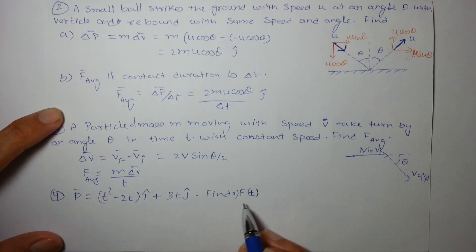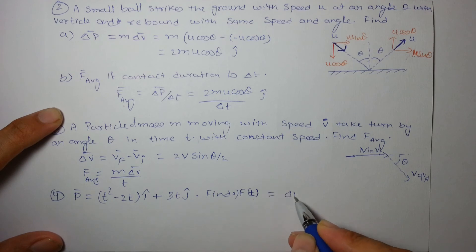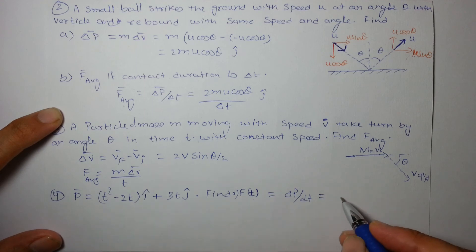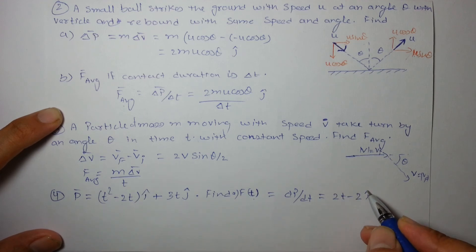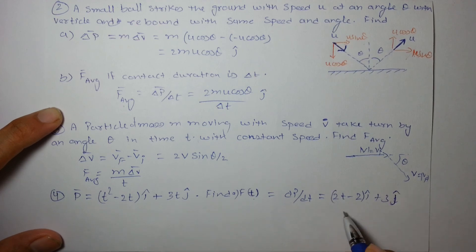In the next example we have to find F as a function of time from the given momentum expression. F = dp/dt, so we just differentiate it: dp/dt = (2t − 2)î + 3ĵ. That is the force as a function of time.